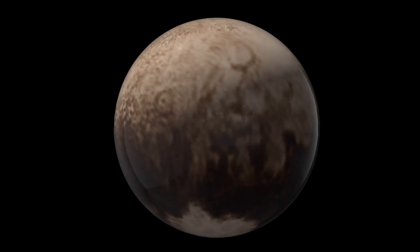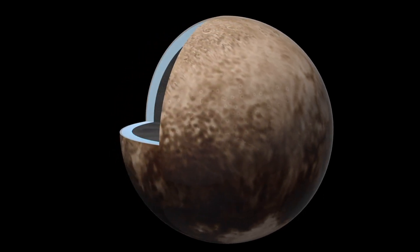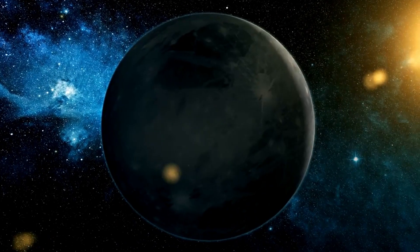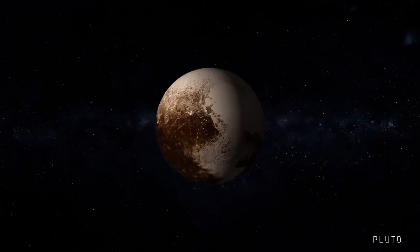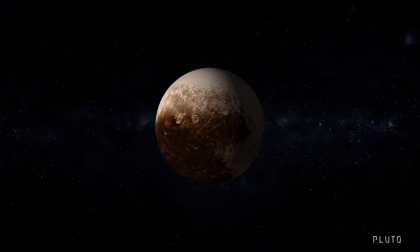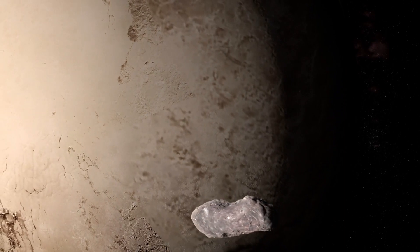Pluto meets the first two criteria. It orbits the sun and is spherical. However, it does not meet the third criterion. Pluto shares its orbital zone with other objects in the Kuiper Belt, meaning it hasn't cleared its neighborhood of other debris.